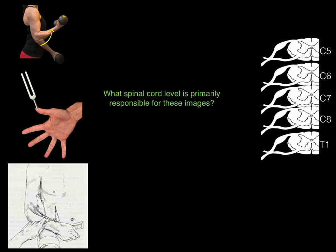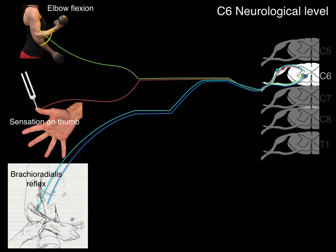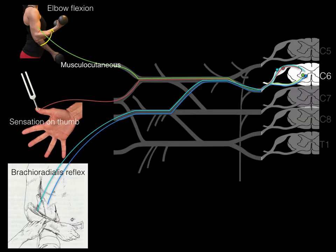What spinal cord level is primarily responsible for elbow flexion, sensation of the thumb, and the brachioradialis reflex? The answer is the C6 neurological level. The peripheral nerves transporting these are: musculocutaneous nerve for elbow flexion, median nerve for sensation of the thumb, and radial nerve (both motor and sensory) for the brachioradialis reflex.